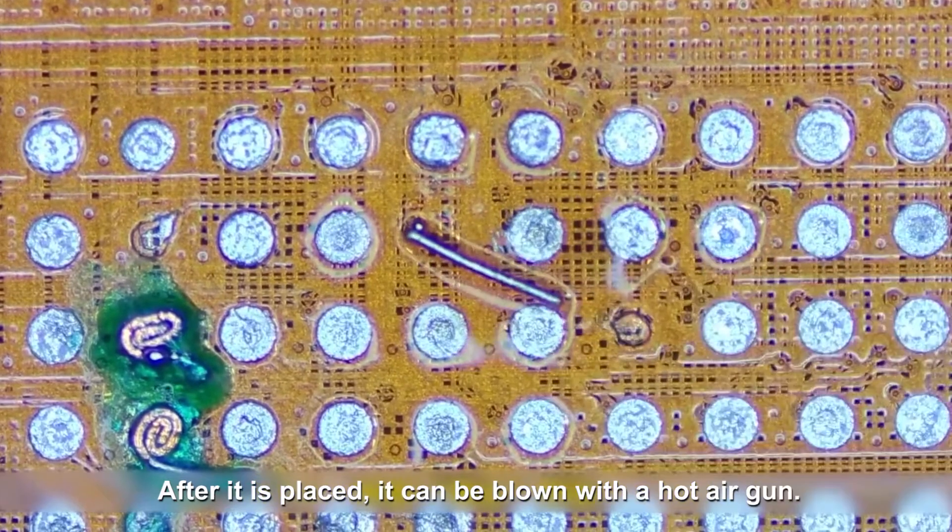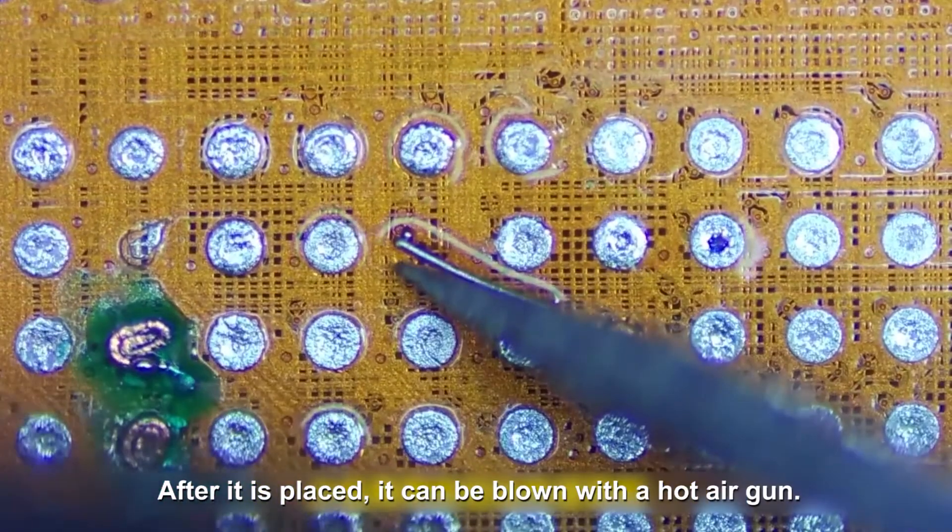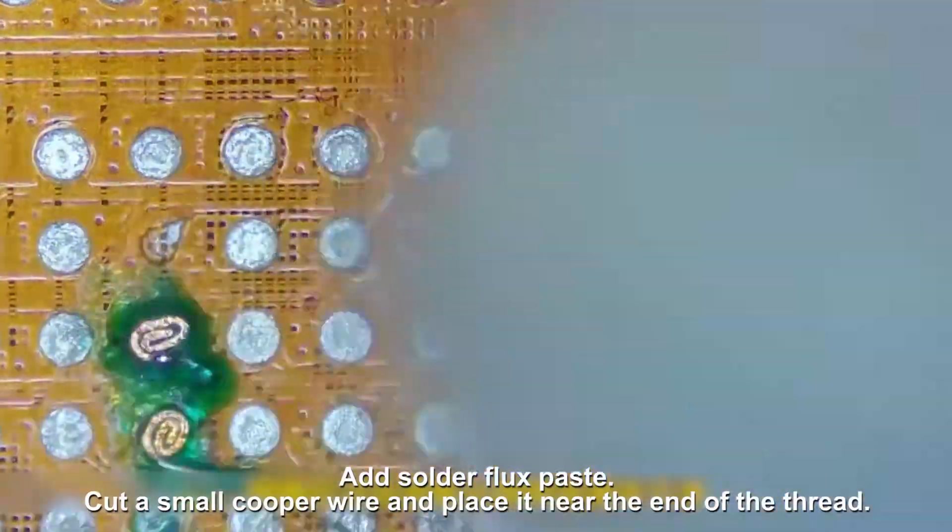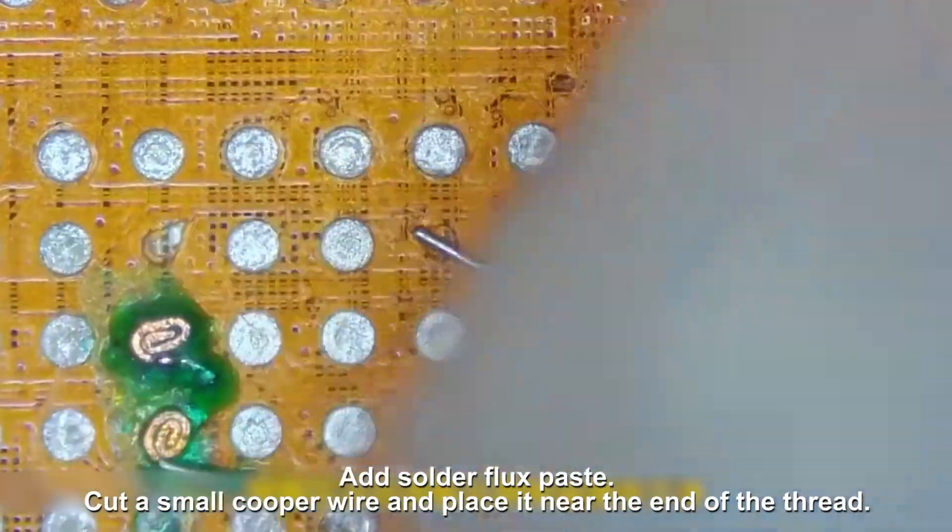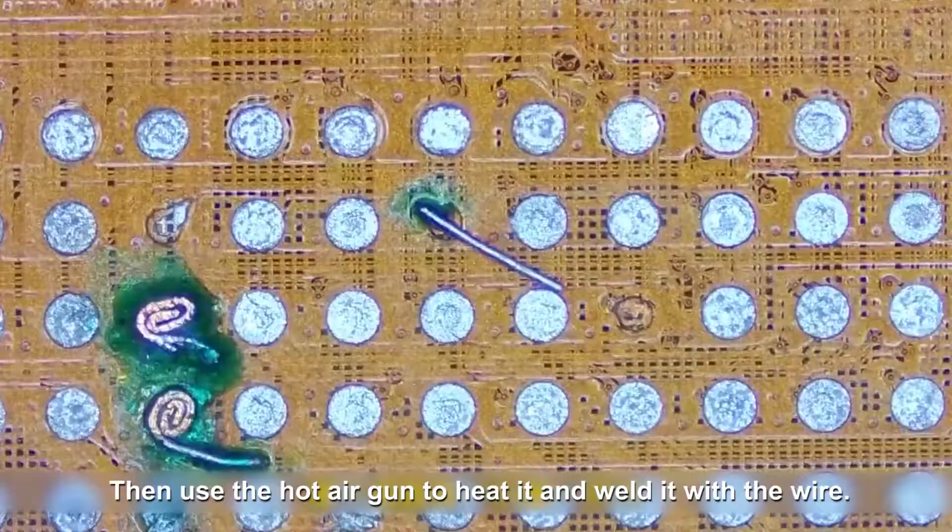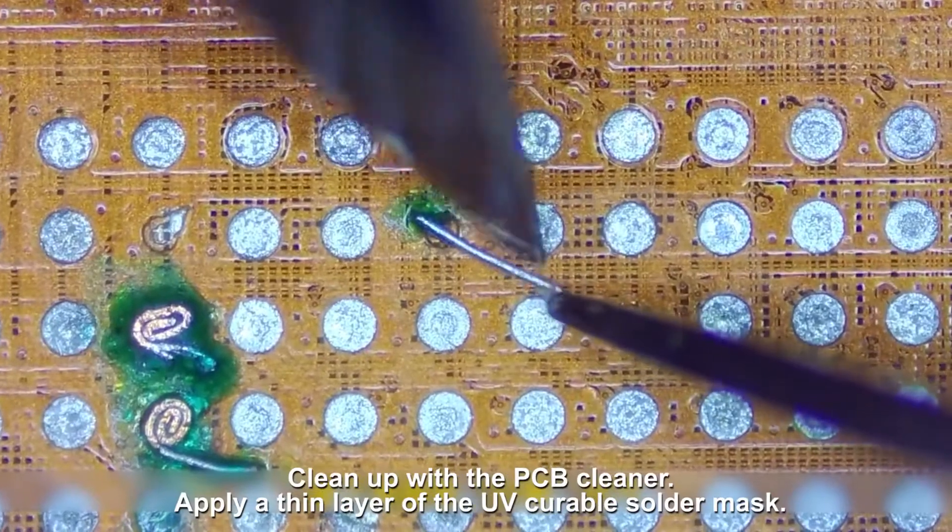After it is placed, it can be blown with a hot air gun. Add solder flux paste. Cut a small copper wire and place it near the end of the thread. Then use the hot air gun to heat it and weld it with the wire. Clean up with the PCB cleaner.